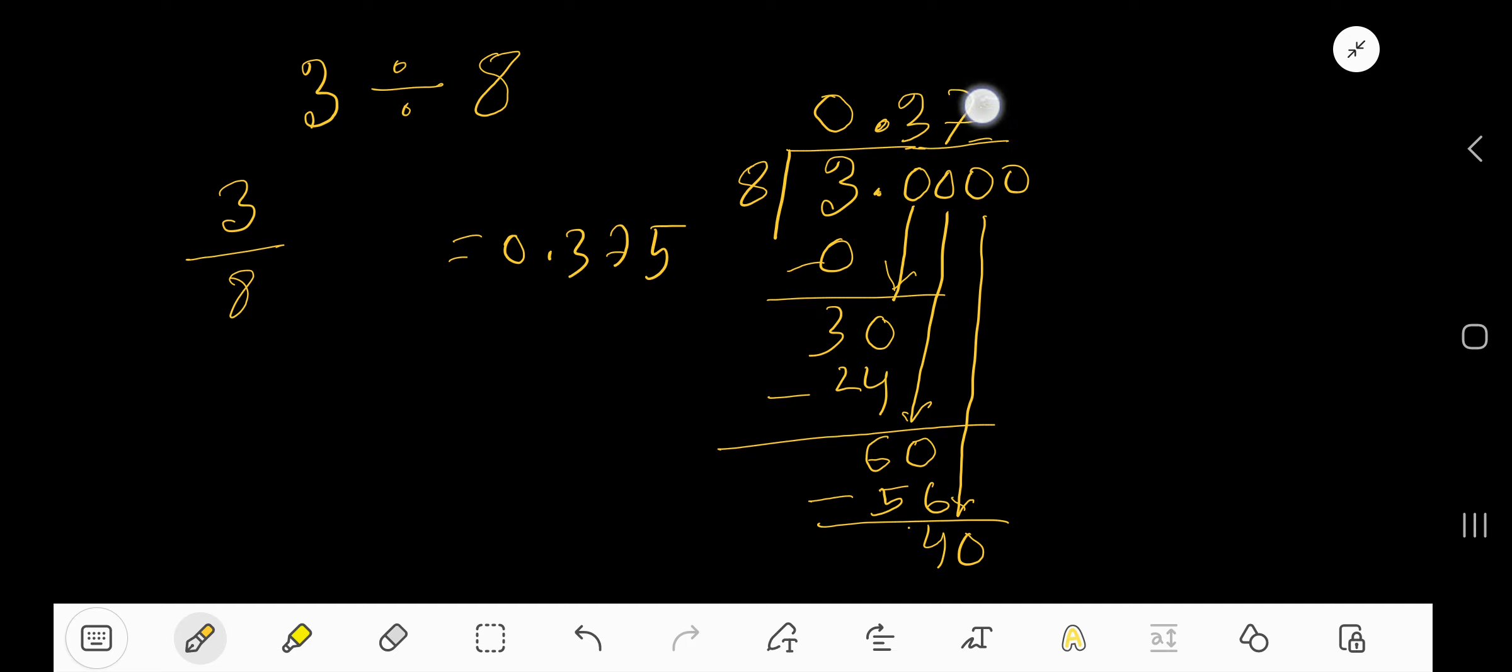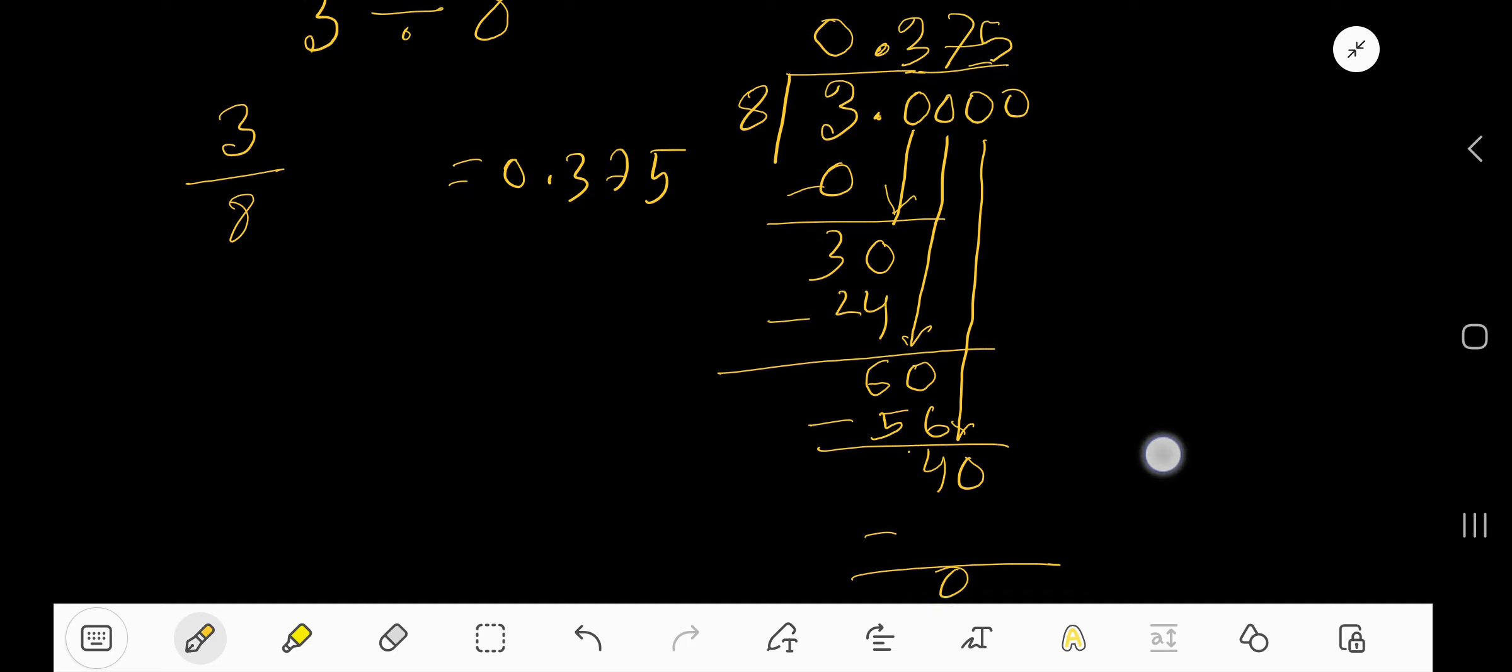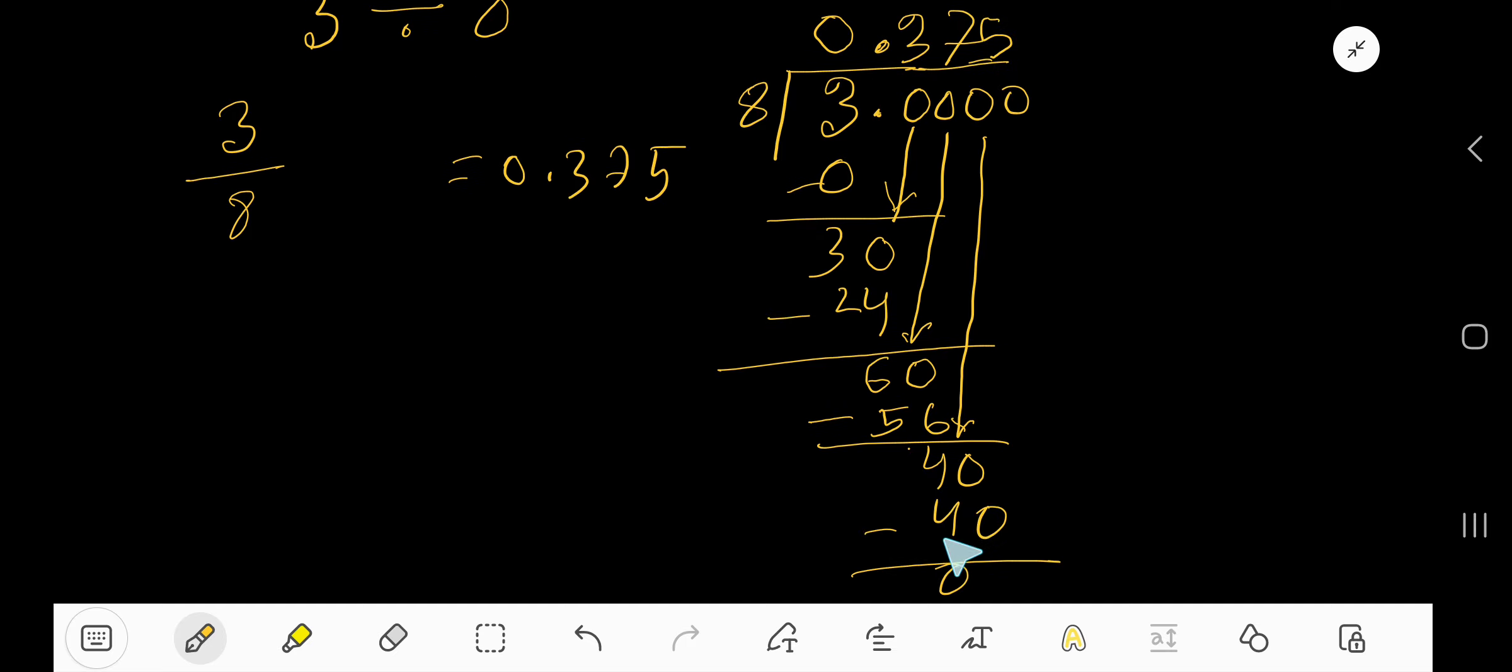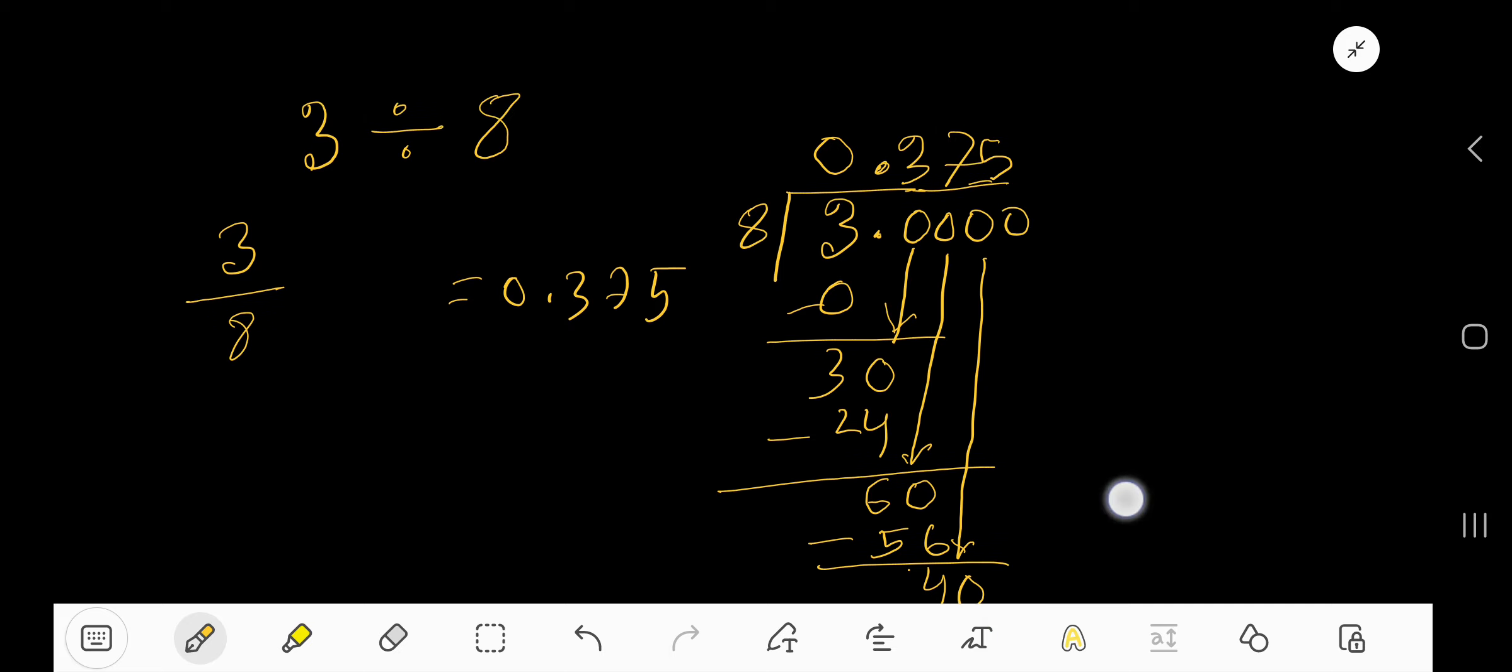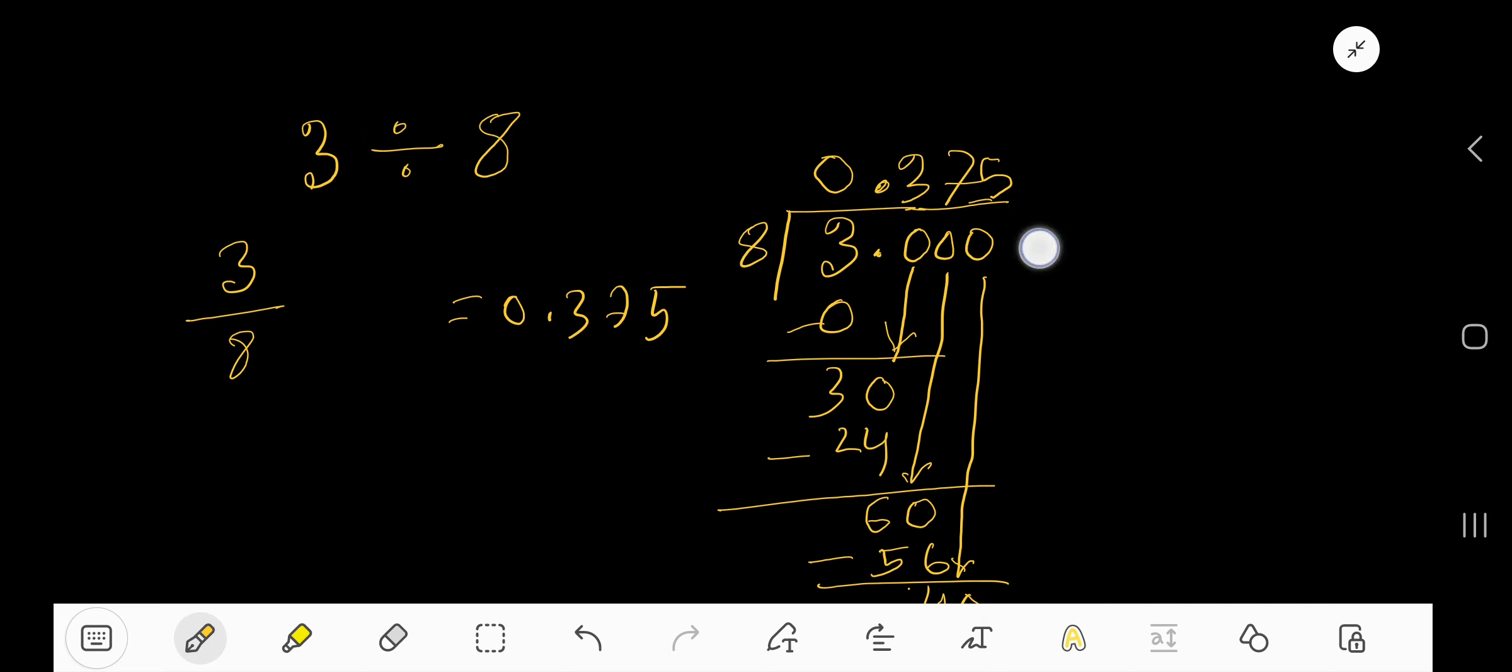Five times. Five times eight equals forty. If you subtract, you are getting zero, so here your division process is stopped. So you are getting point three seven five, right? We are using this zero just to mean that this number is less than one.